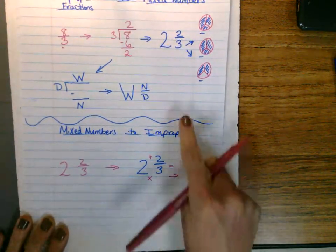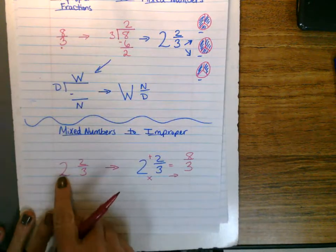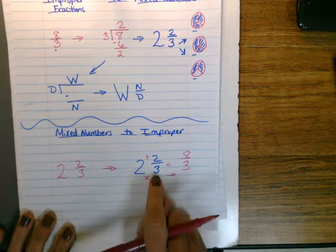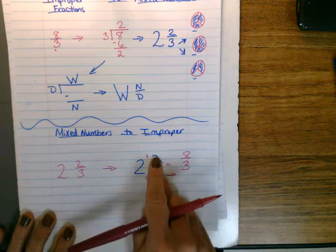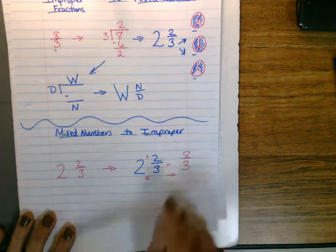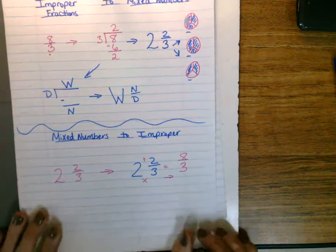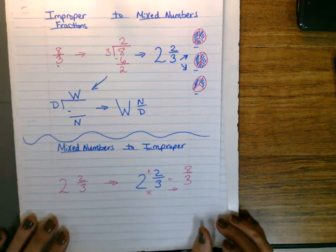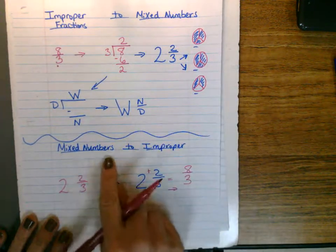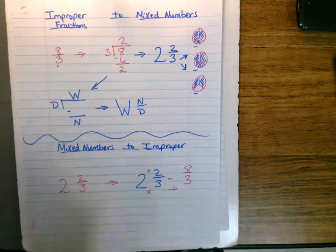So as you can see, two and two-thirds is eight-thirds, and we just merely multiply three times two is six, plus two is eight, and slide the denominator over. All right, this is improper fractions to mixed numbers, and mixed numbers to improper. I hope this helped.